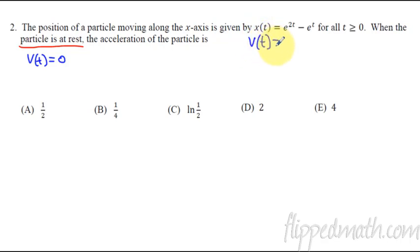First, let's take the derivative. So we get the derivative of position is velocity. So then this is going to be e raised to the 2t times 2 and then minus e raised to the t. All right, so there's our velocity.